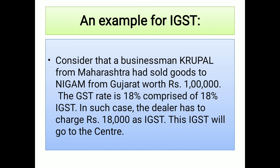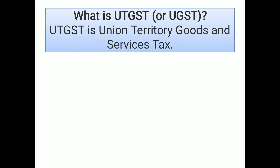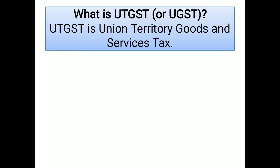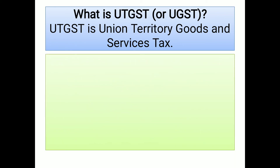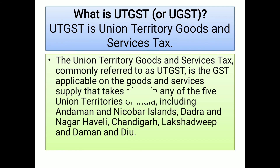Now we come to the fourth type: UTGST, which stands for Union Territory Goods and Service Tax. The Union Territories include Andaman and Nicobar Islands, Dadra and Nagar Haveli, Chandigarh, Lakshadweep, Diu, Daman, and Puducherry.